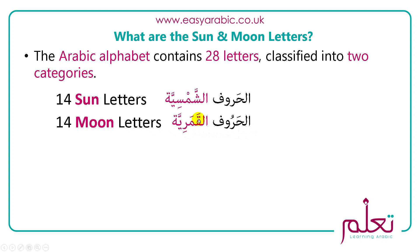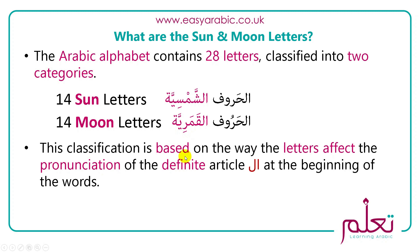This classification is based on the way the letters affect the pronunciation of the definite article 'al' at the beginning of words. I showed you a few examples in the previous lesson. We'll go through each one and I'll show you the differences and how to recognize which ones are the moon letters and which are the sun letters. I'm going to start with the moon letters first.